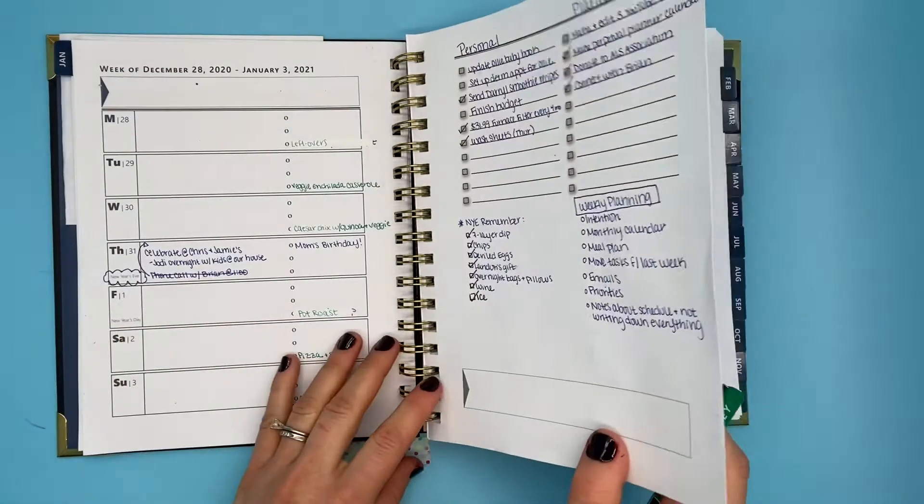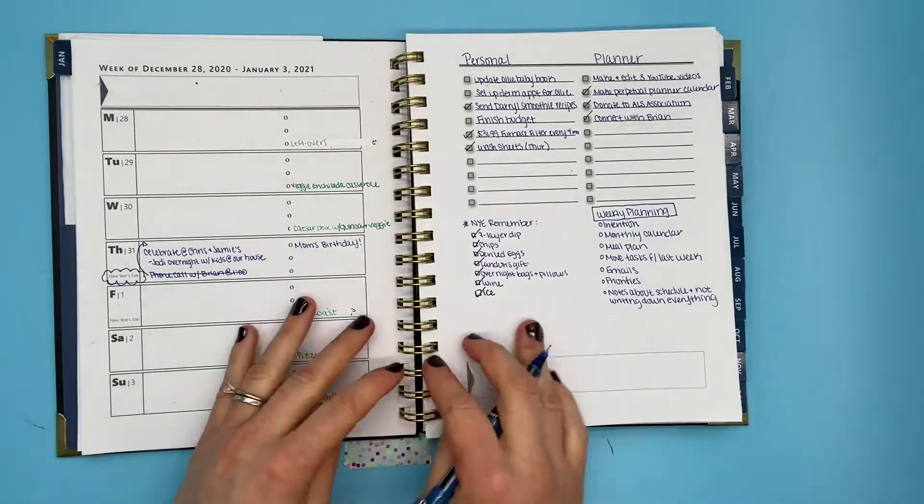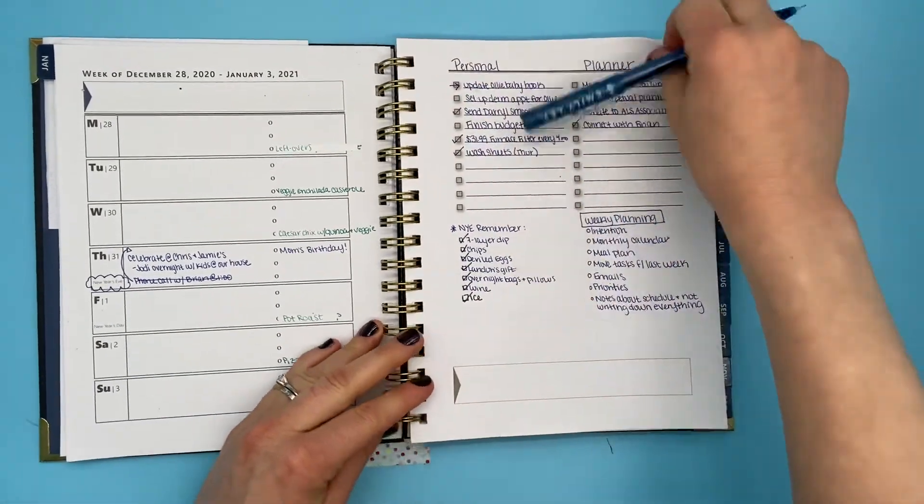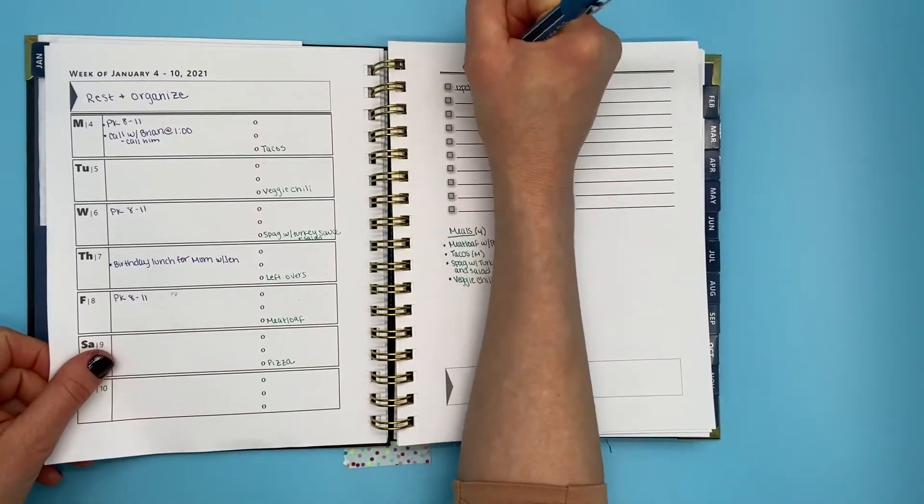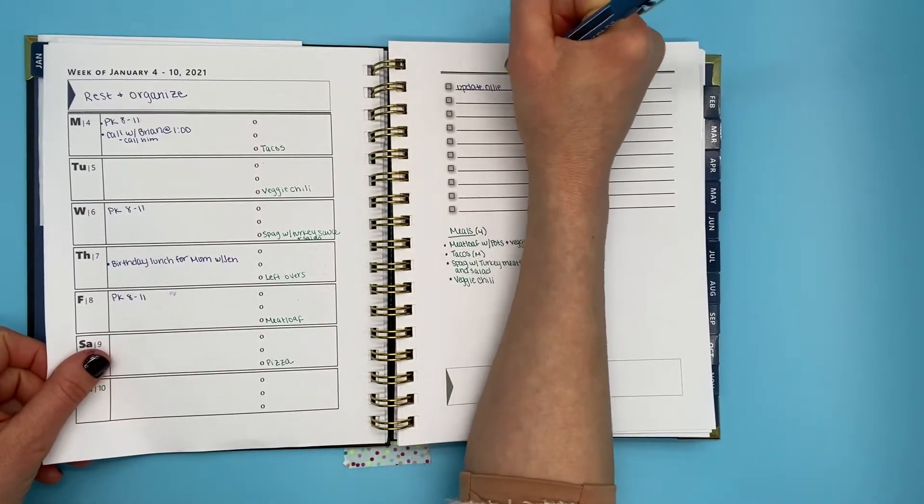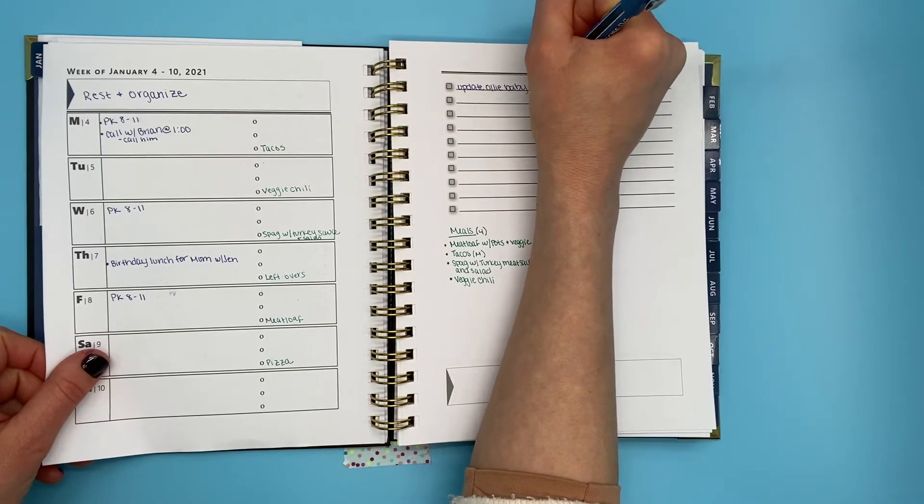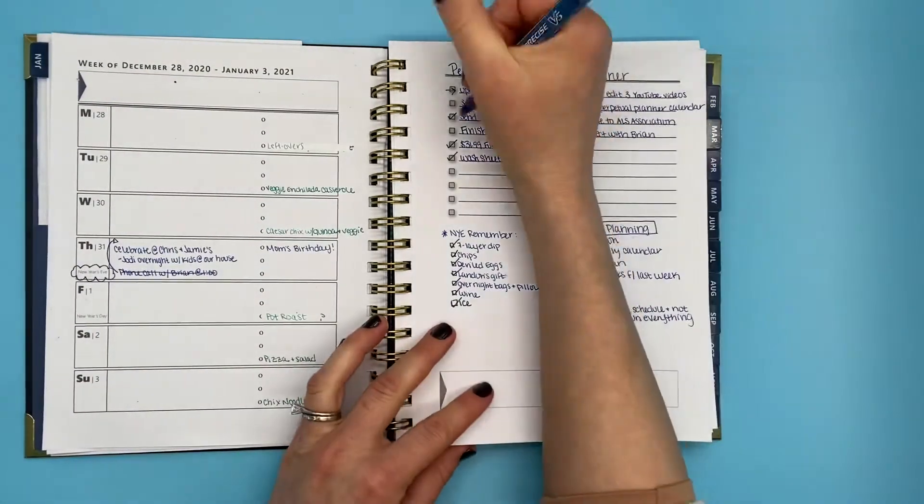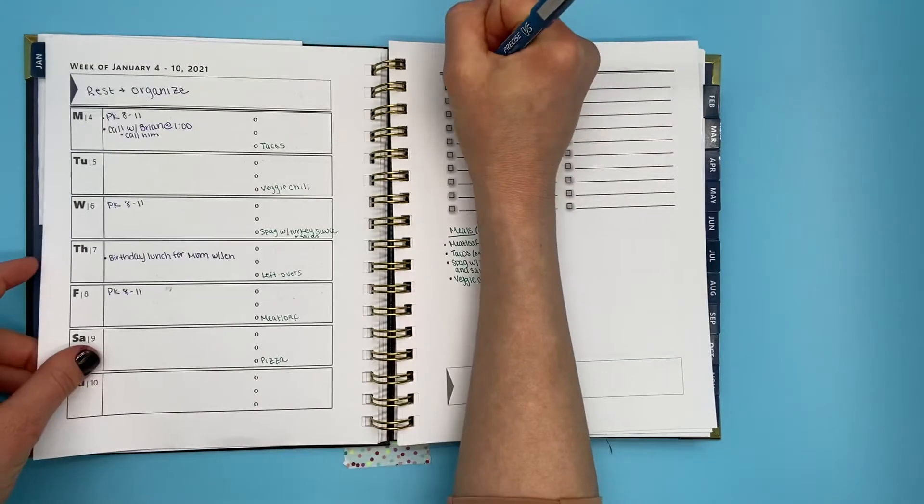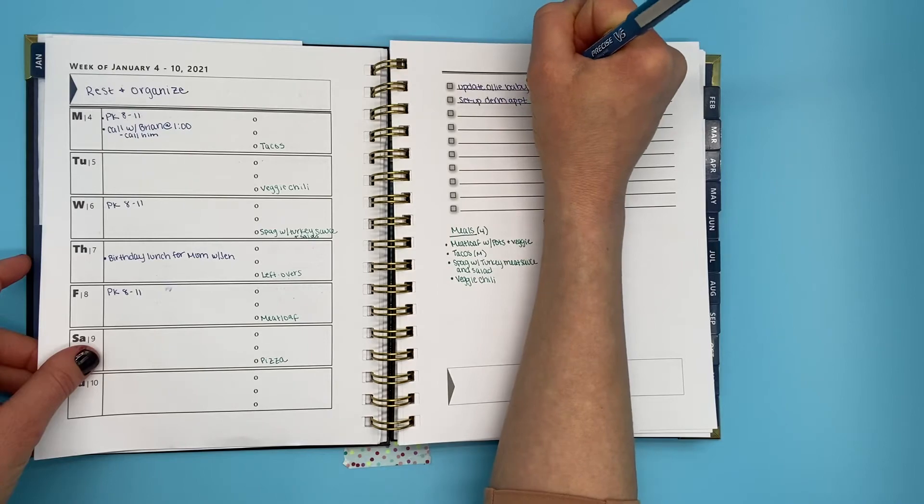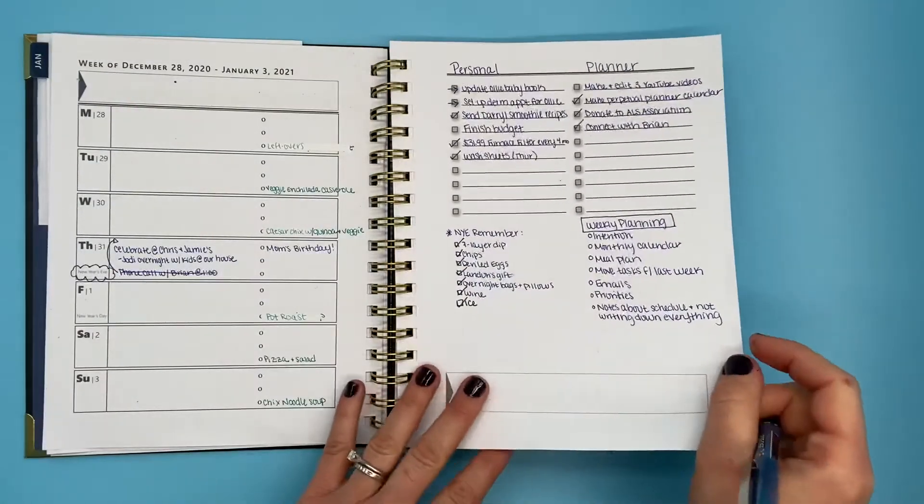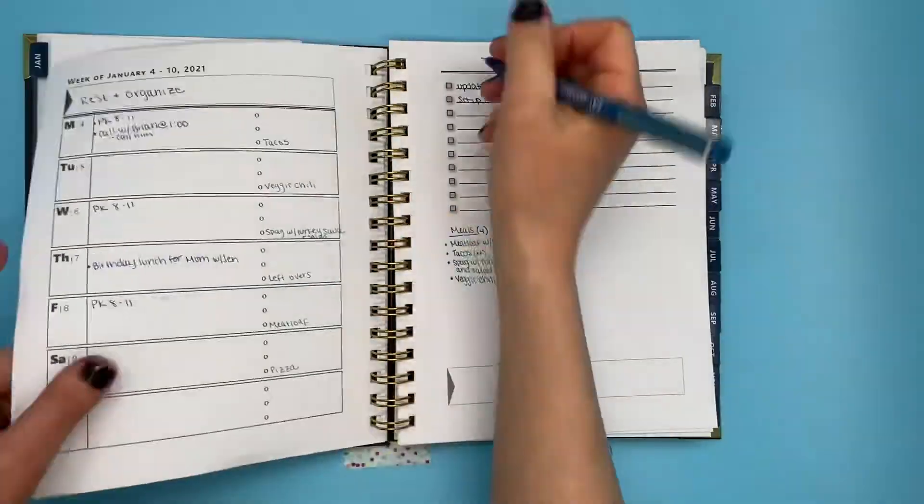After that, I start on my to-do list. The first thing I do is look at last week's to-do list and see if there's anything that I didn't finish, and I move it over to this upcoming week that I'm planning. I use a little forward arrow to mean that I didn't do it and I moved it forwards. You don't have to do that; that's just what I do.